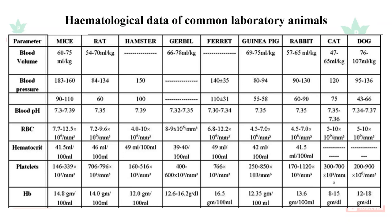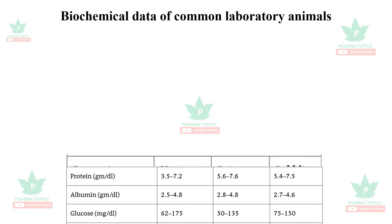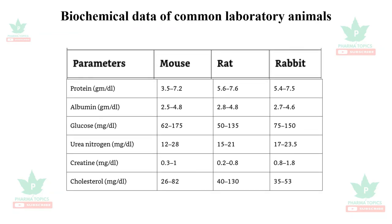Biochemical data of common laboratory animals: total protein in mouse is 3–7 g/dL; in rats 5–7 g/dL; in rabbits 5–7.5 g/dL. Albumin is around 2–5 g/dL across species. Glucose is 62–175 mg/dL, similar to humans. Blood urea nitrogen is 12–28 mg/dL; creatinine is less than 1 mg/dL across all laboratory animal species. Cholesterol is 26–82 mg/dL in mice, 40–130 mg/dL in rats (similar to humans), and 35–53 mg/dL in rabbits.